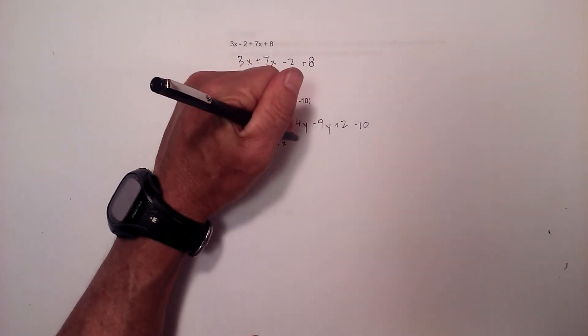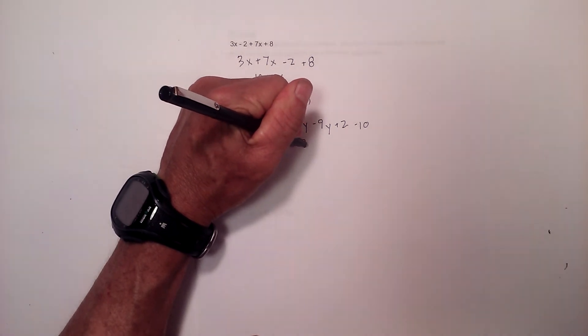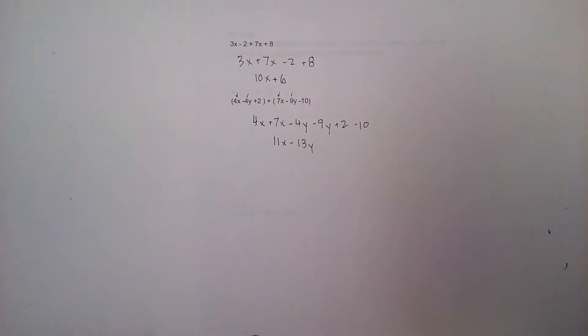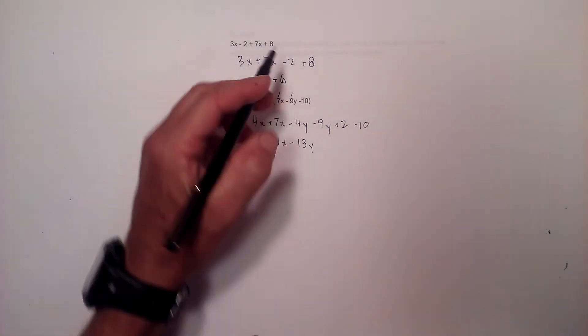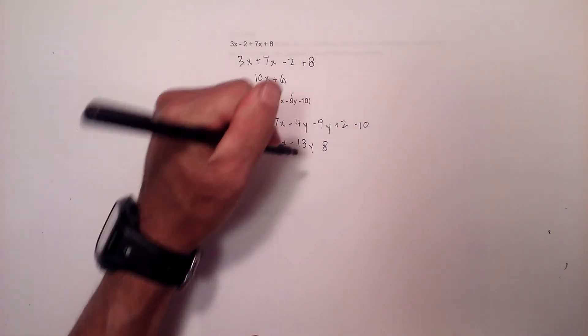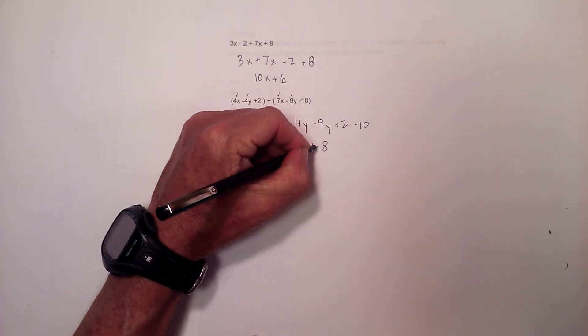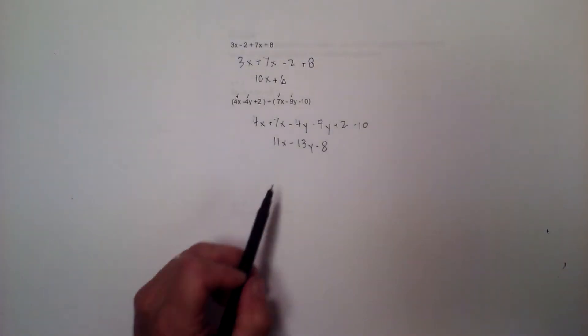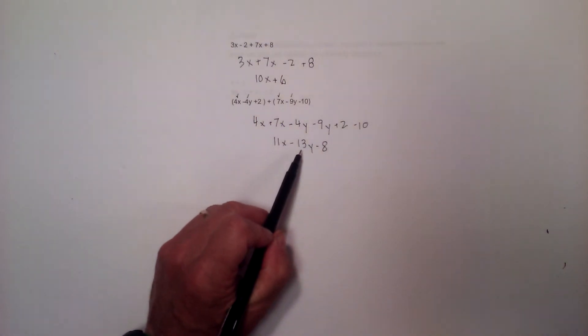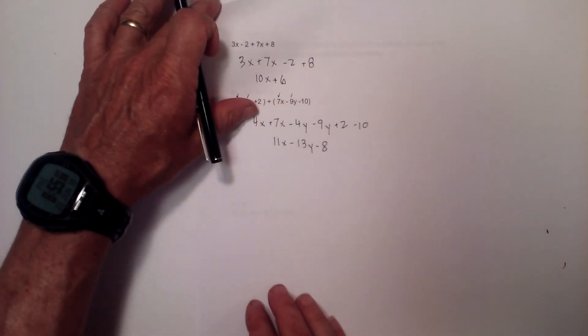For negative 4y and negative 9y, they're the same sign, so I add and take their sign, which gives 13y and it will be negative. The difference between 10 and 2 is 8. Will it be positive or negative? It will be negative because 10 is larger than 2. So we have 11x - 13y - 8. That is simplifying.